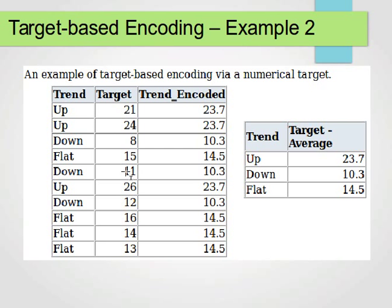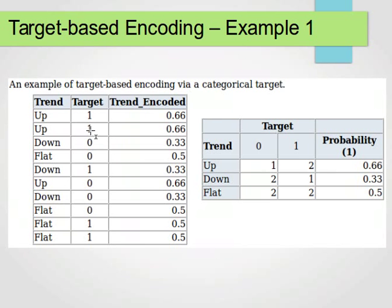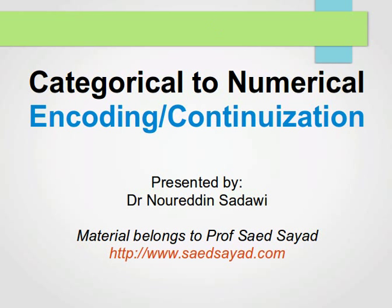Again, this time the target is numerical, so we do the average, whereas here the target itself is categorical, either 0 or 1, so we do the probability. I hope that makes sense. In the next video, I'll explain how to transform numerical variables into categorical variables, which is the opposite of this process. Thank you very much for watching, and I'll see you in my next video.